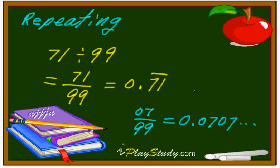So you can write this one in this way, right? 0.07 with a line over 07. That's it.